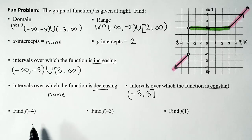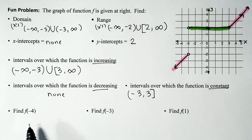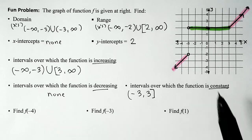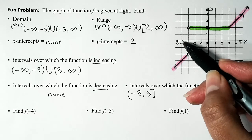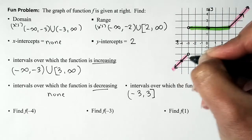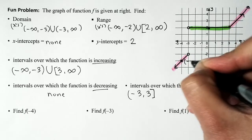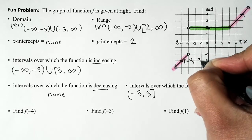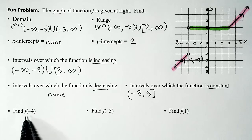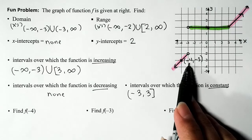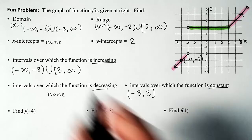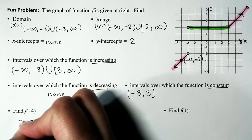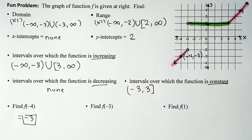For the grand finale, let's evaluate the function at negative 4, negative 3, and 1. f(-4): I locate negative 4 on the x-axis and go up or down until I hit the graph. Going down, the coordinate is (-4, -3). So when the input is negative 4, the output is negative 3. f(-4) = -3.